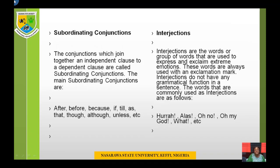Subordinating conjunctions join together an independent clause with a dependent clause. The main subordinating conjunctions are: after, before, because, if, till, as, that, though, although, unless, etc. When we talk about coordinating conjunctions, whatever we join is of the same rank. But with subordinating conjunctions, one is an independent clause that can stand on its own, and we add something else that cannot stand on its own. Examples are in the notes.